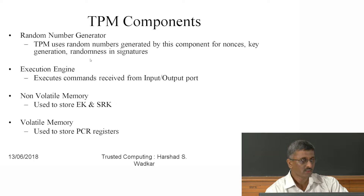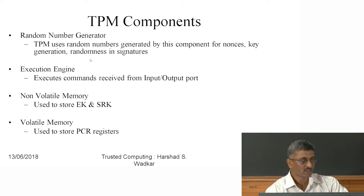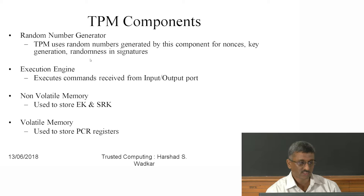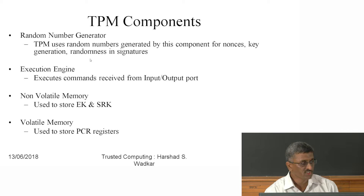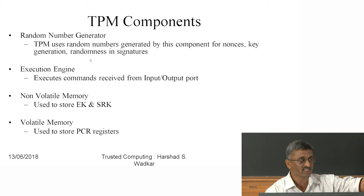There is a random number generator (RNG) for RSA and other operations. TPM generates true random numbers using a non-deterministic source. The execution engine executes commands received from I/O — commands like 'hash this value', 'measure hash value', or 'load the next component'. Non-volatile memory stores the EK (Endorsement Key) and SRK (Storage Root Key). Volatile memory is used for PCRs (Platform Configuration Registers).